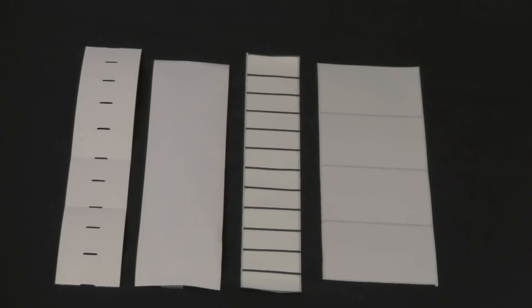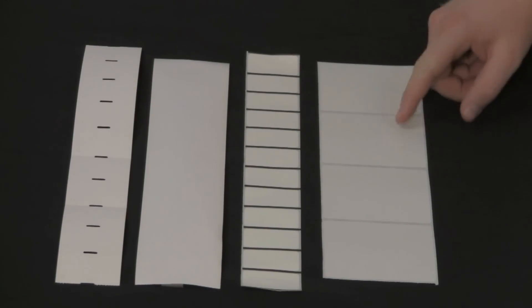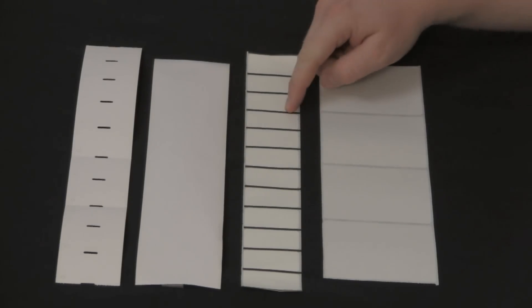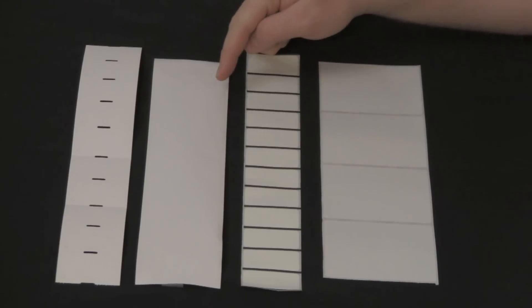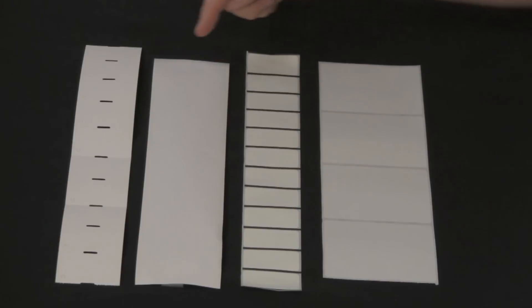The different label types that can be used in this printer are gap, black bar, continuous, and notched or hole media.